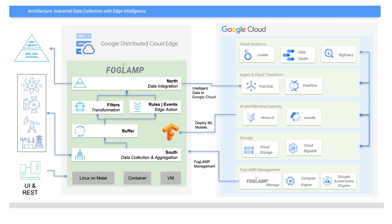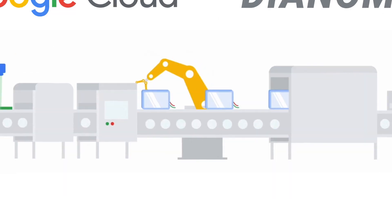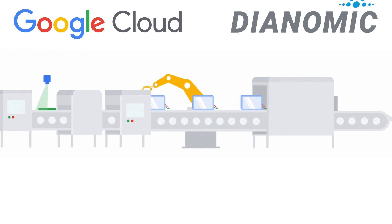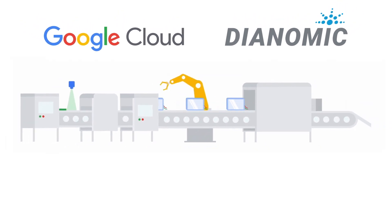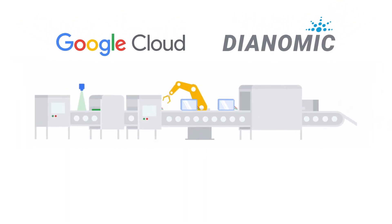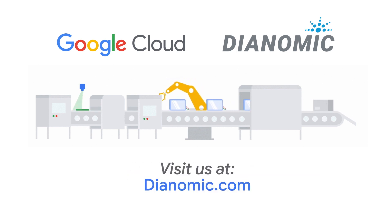Finally, FogLamp sends alerts, control signals and data to the required operational systems. This generic solution can be applied to many process manufacturing, discrete manufacturing, worker safety and efficiency challenges. FogLamp — let's get you there! Visit us at Dianomic.com.